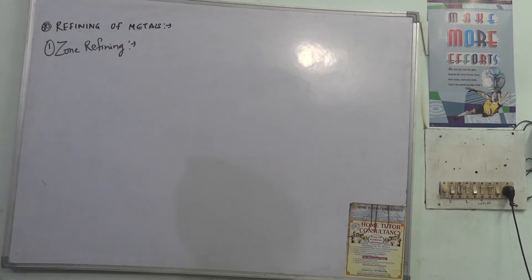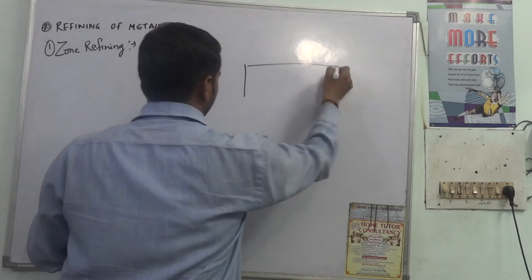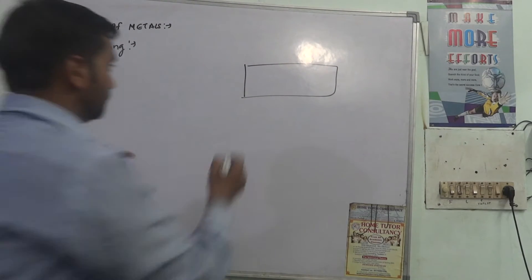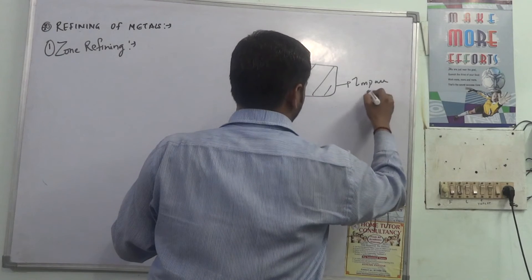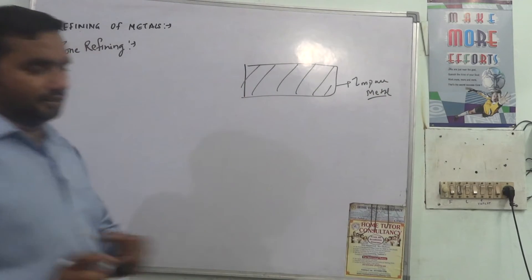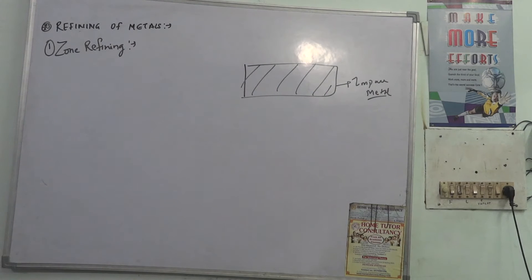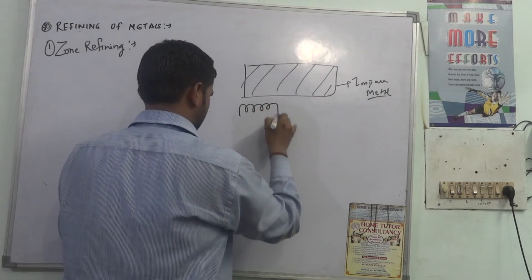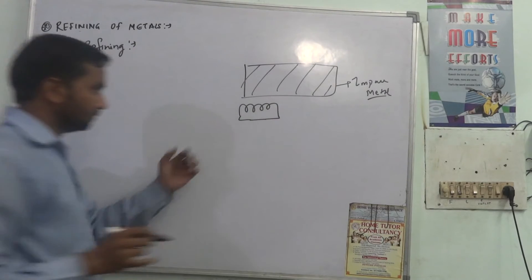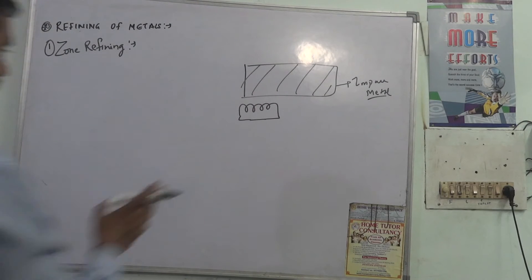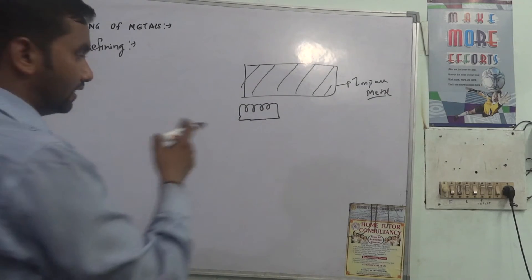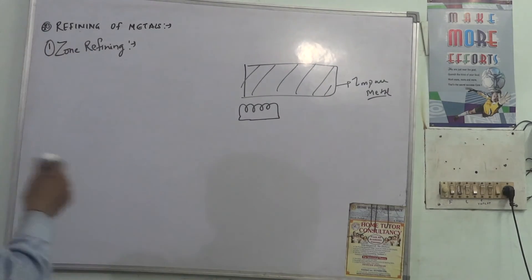Now what is zone refining? Metal is converted into a bar or a rod and which is heated at one end by a circular heater. What we do is we convert and make it into a rod of metal, with a circular heater we start to heat at one end.